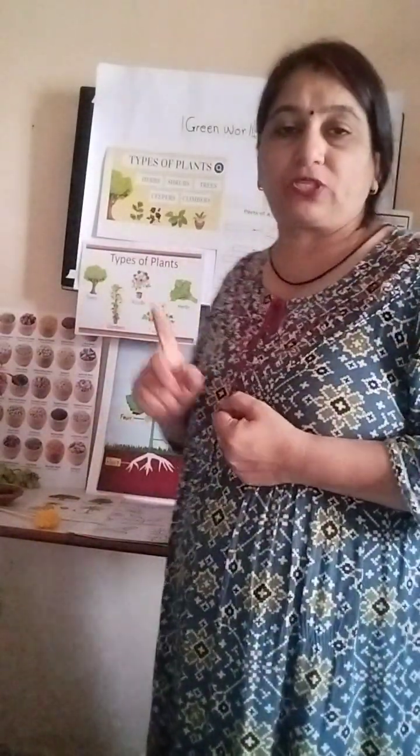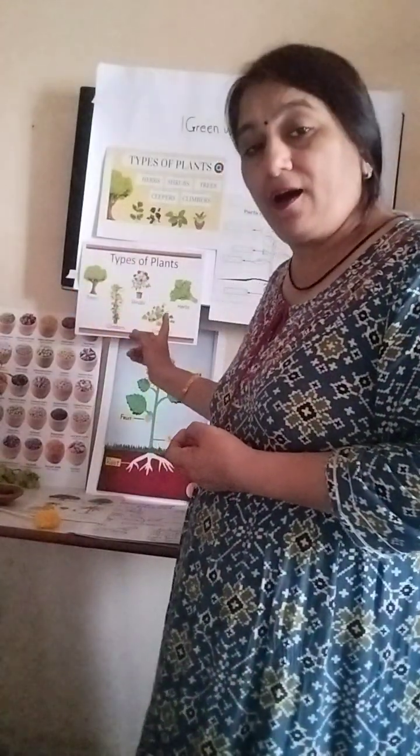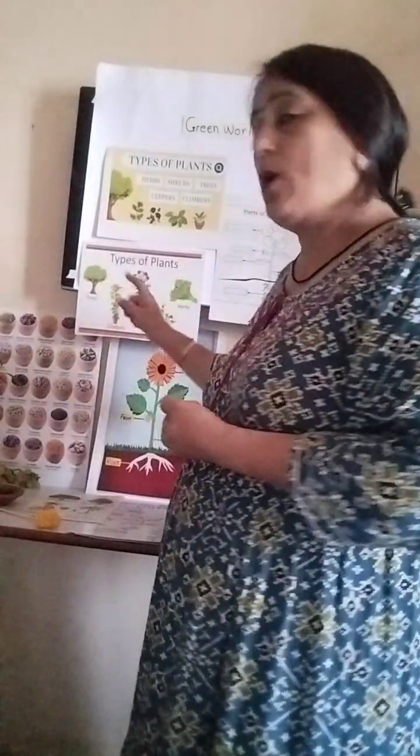Then comes the shrubs. Shrubs are small plants, like the tulsi plant - that is called basil - and mint plant. They are all herbs. Herbs and shrubs are small plants. Tulsi is a small plant, mint is a small plant, tomato is a small plant. They are all called shrubs or herbs.